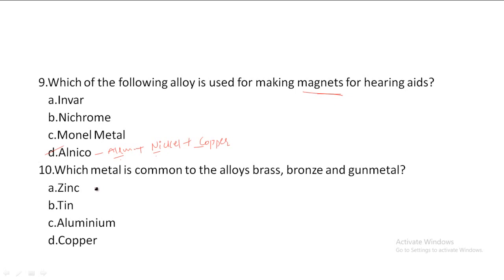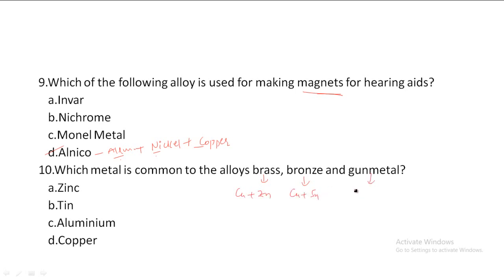Next one: Which metal is common to the alloys Brass, Bronze, and Gun metal? Brass is Copper plus Zinc. Bronze is Copper plus Tin. Gun metal is Copper plus Tin plus Zinc plus Lead. The common element in all three is Copper. Option D, Copper, is the correct answer.